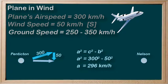Back to our airplane: if we were heading to a location north of Nelson, our ground speed would be less than 296 kilometers per hour, as we'd be fighting the wind even more. It would never get lower than 250 kilometers per hour — our lower limit — so it would be somewhere between 250 and 296. If we were heading to a location south of Nelson, our ground speed would be greater than 296, as the wind would aid our overall speed — between 296 and our maximum of 350 kilometers per hour, depending on our angle.